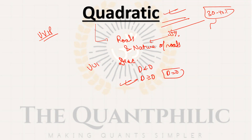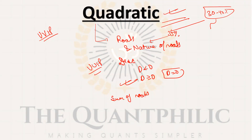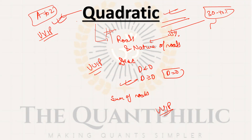Quadratic is a very versatile topic. You should know the application of identities here as well. The product of the roots, the sum of the roots for a quadratic equation — this is a VVIP topic. You need to know quadratic from A to Z.